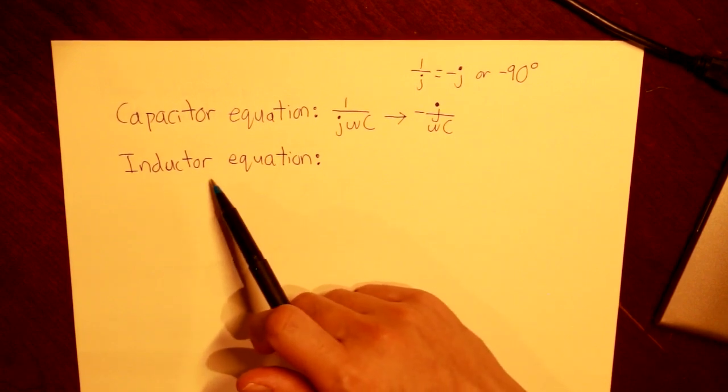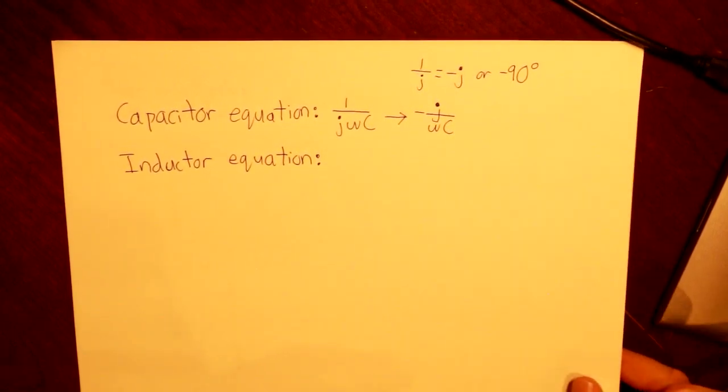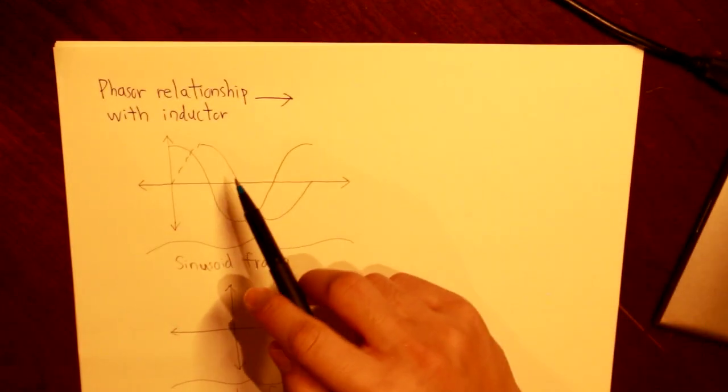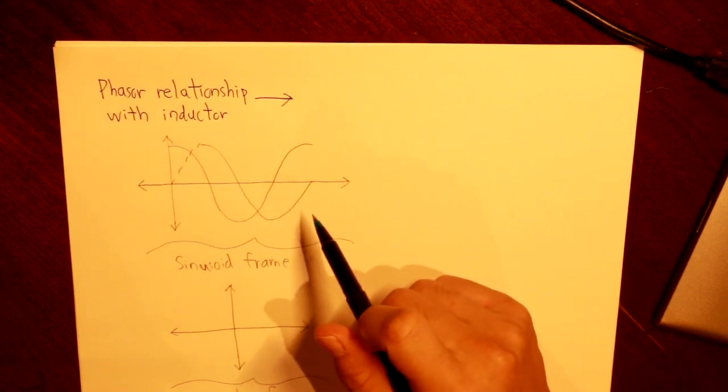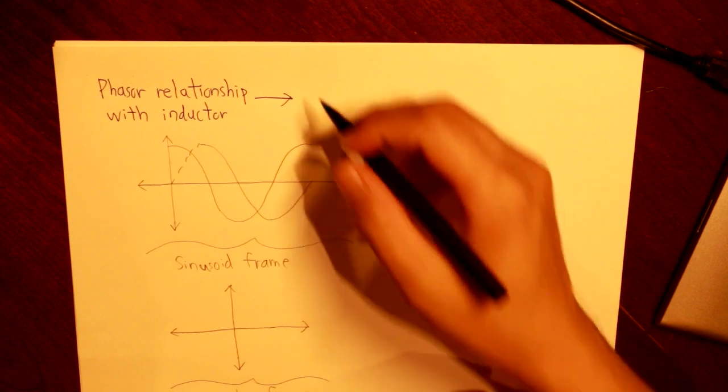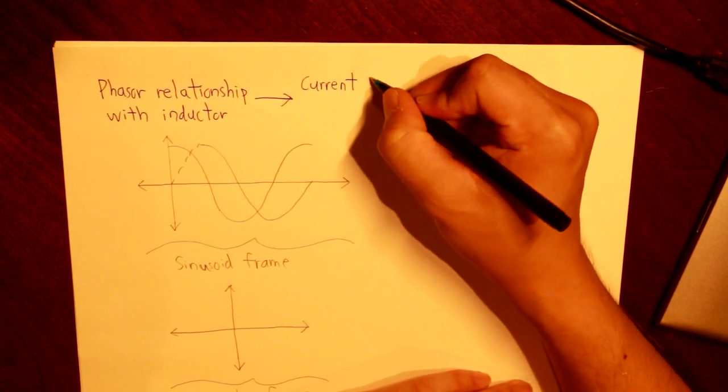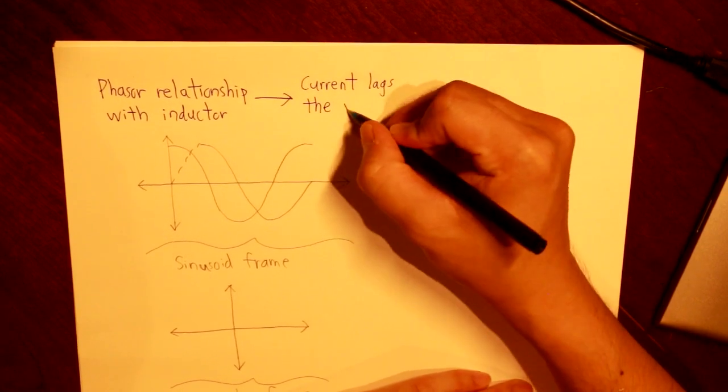Let's move on to our inductor behavior. So for phasor relationship with the inductor, it is the polar opposite of the capacitor. And that means that the current lags the voltage.